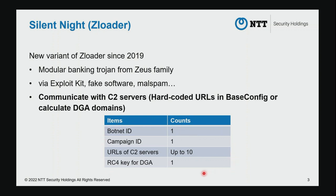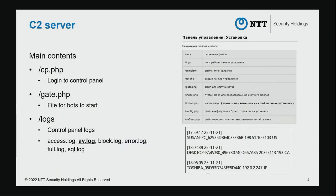This table shows the contents of the base config. As you can see here, it contains C2 server URLs and an RC4 key to generate DGA domains. In the next slide, we talk about the C2 server. These are the contents of the ZLoader C2 server. In this presentation, we focus on three contents: cp.php, a.php, and the logs directory.